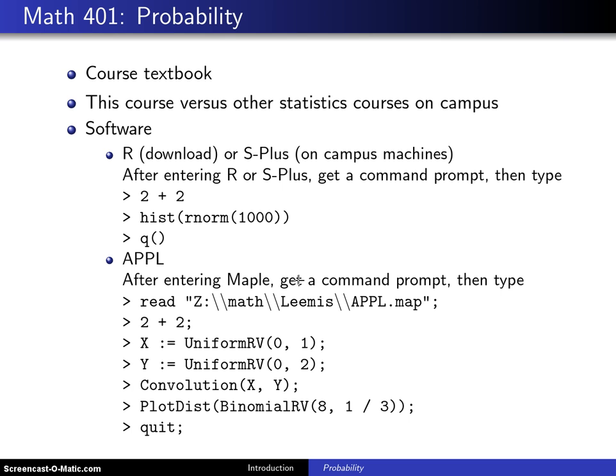There are two pieces of software used in this class. The first is R and it also has a look-alike which is S-Plus, but most people will use R. You can simply Google the letter R and download the software. Once you get it downloaded, you should try a couple quick commands. Try 2 plus 2 and it should come back with 4. Then to try some graphics, you can draw a histogram of a thousand standard normal random variates and you will get a histogram drawn. Finally, the q command will quit and get you out of R.